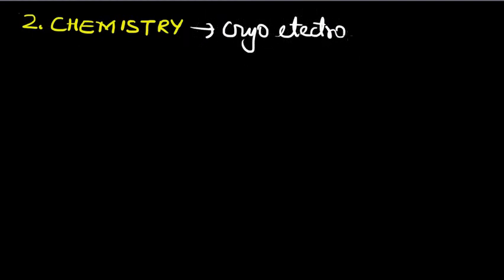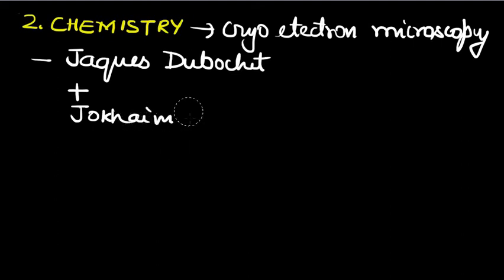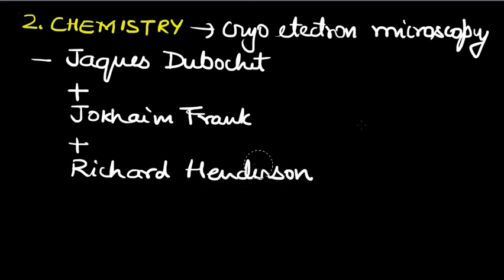Now when we talk about the second Nobel Prize, it was in Chemistry. And it was given for cryo-electron microscopy. This prize was given to three people: Jacques Dubochet, Joachim Frank, and Richard Henderson.